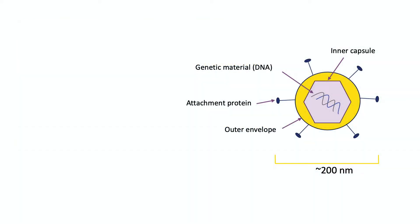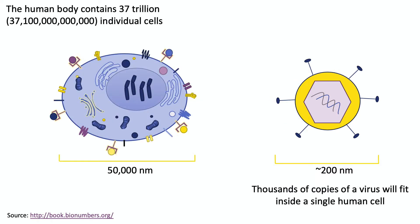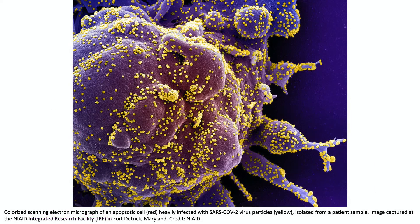TVEC is a modified version of a naturally occurring virus. I've given you a rough drawing of the virus here. Viruses are tiny compared to the cells that make up our body — this diagram is very much not to scale. Viruses are in fact so small that thousands of virus particles can fit inside a single human cell. This image is of a dying human cell heavily infected by SARS-CoV-2, the coronavirus that causes COVID-19 — not the virus used to create TVEC, but it gives a sense of scale. Human cells are too small to be seen with the naked eye, and yet here we see thousands of yellow coronavirus particles stuck to the surface of a single human cell, colored a bluey-purple by a computer program.